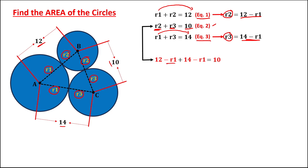we have negative R1 and negative R1, so this is negative 2R1, then equals 12 plus 14, that's 26. Transposing to the other side gives us negative 2R1 equals 10 minus 26, that's negative 16. So R1 equals positive 8.